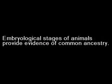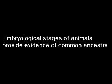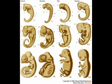Third, embryological stages of animals can provide evidence of common ancestry — they develop in the same way in their early embryonic stages. Fish, turtles, chickens, mice, and humans all develop tails and gill slits, but only fish go on to develop gills, and only fish, turtles, and mice retain substantial tails. The gill slits, however, are in the DNA.